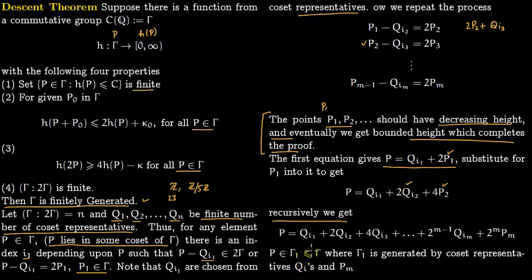So P lies in the subgroup γ₁ of γ, where γ₁ is generated by all the q_{i₁}, q_{i₂}, …, q_{iₙ} (the coset representatives) together with Pₘ.